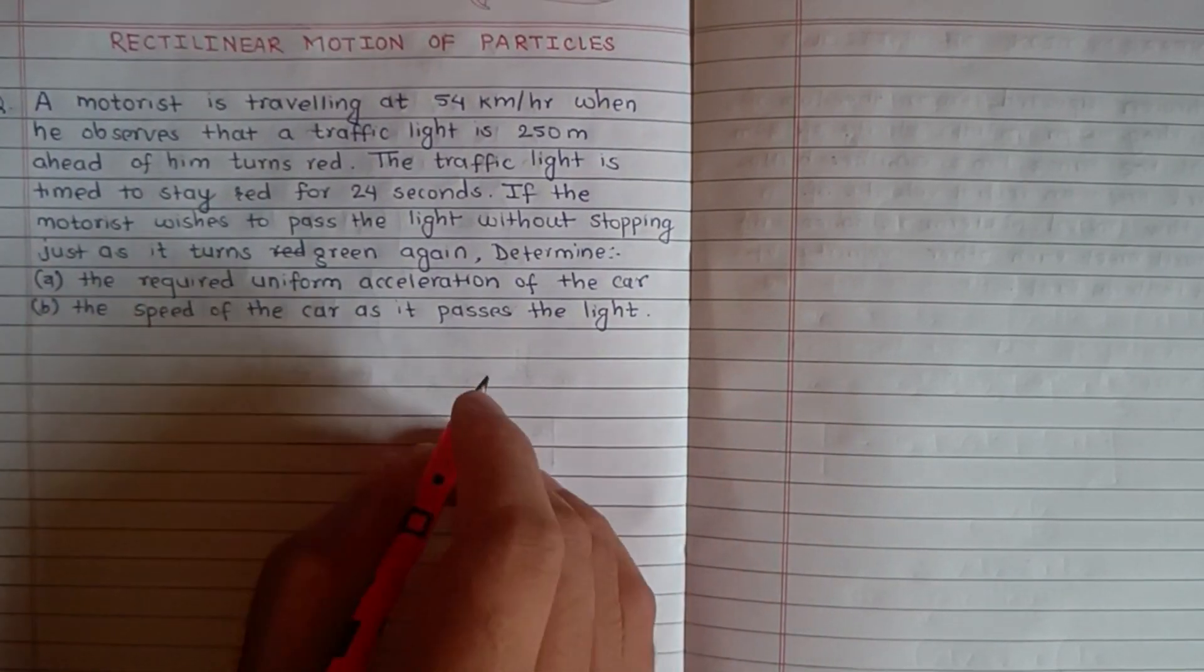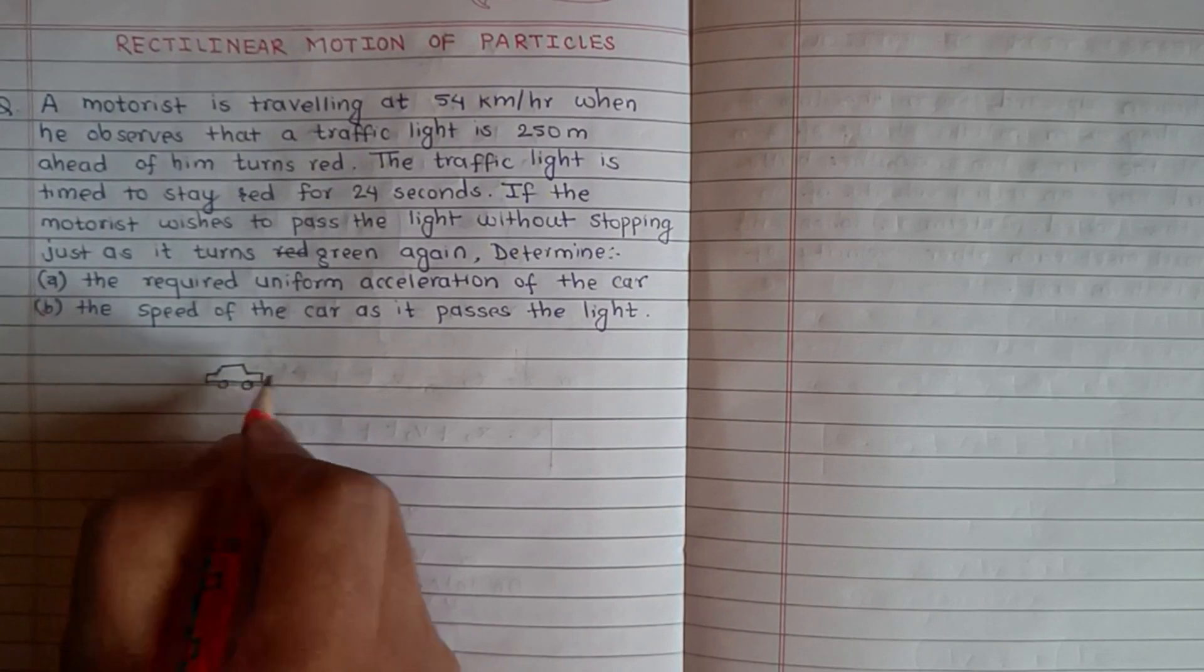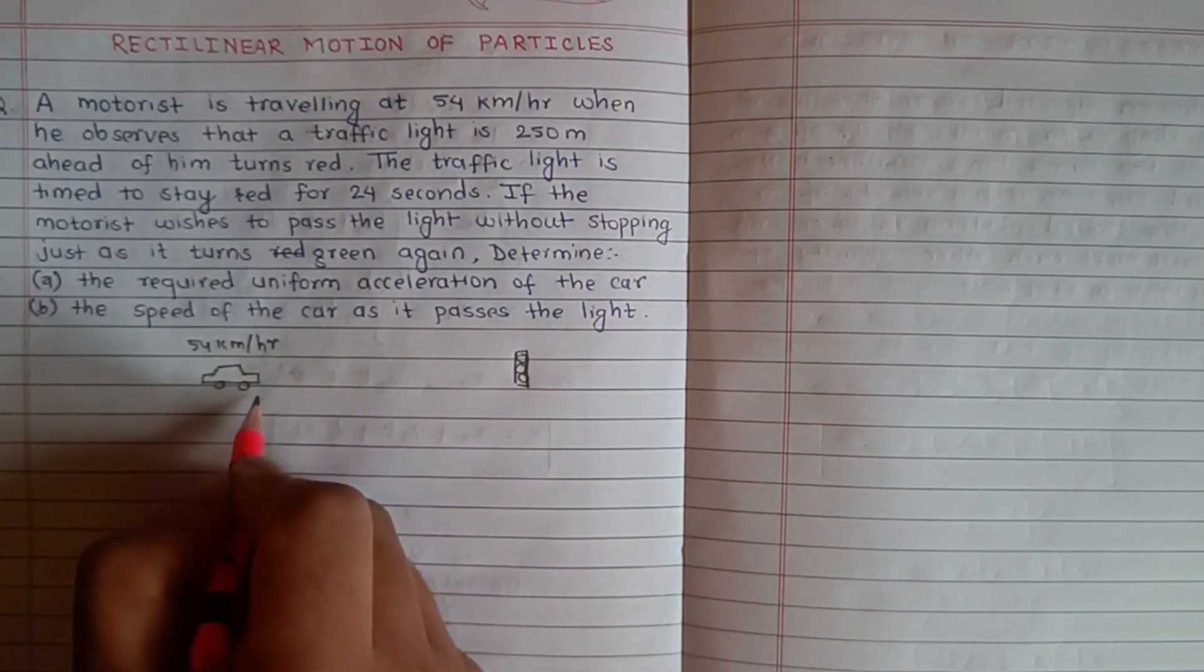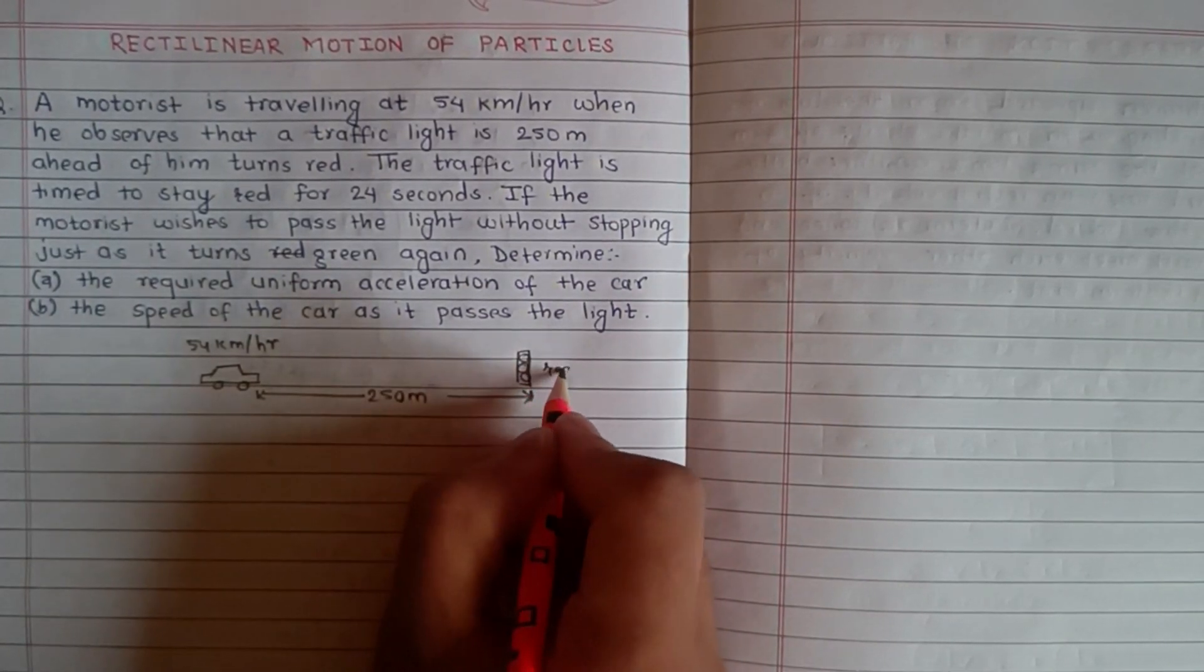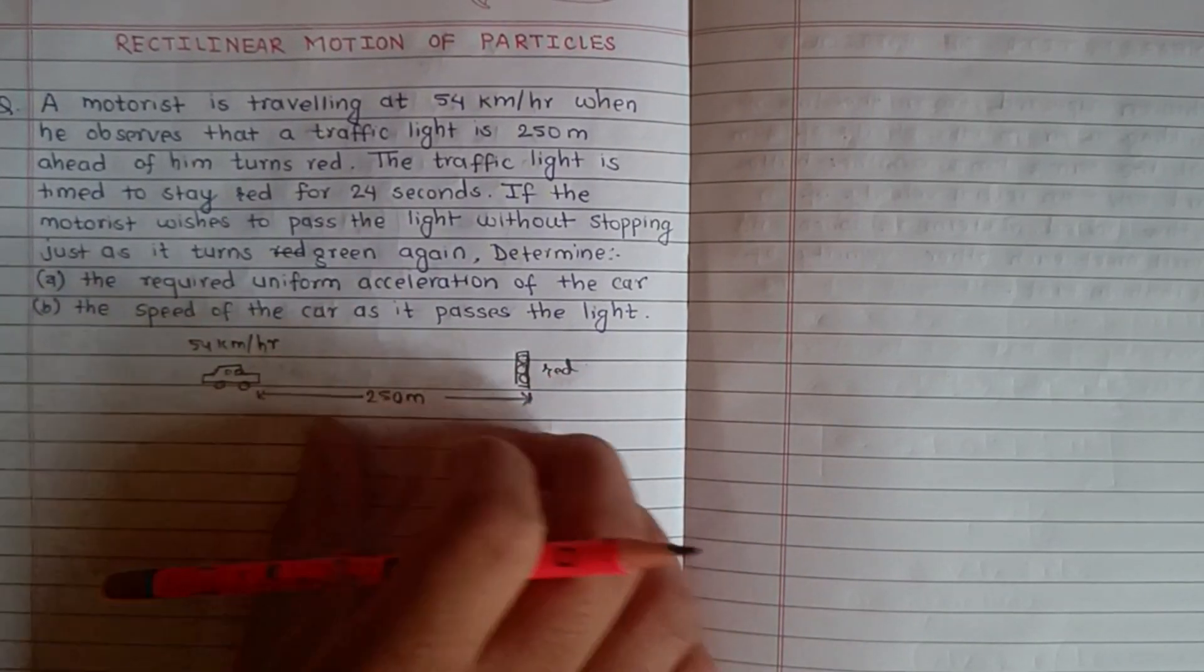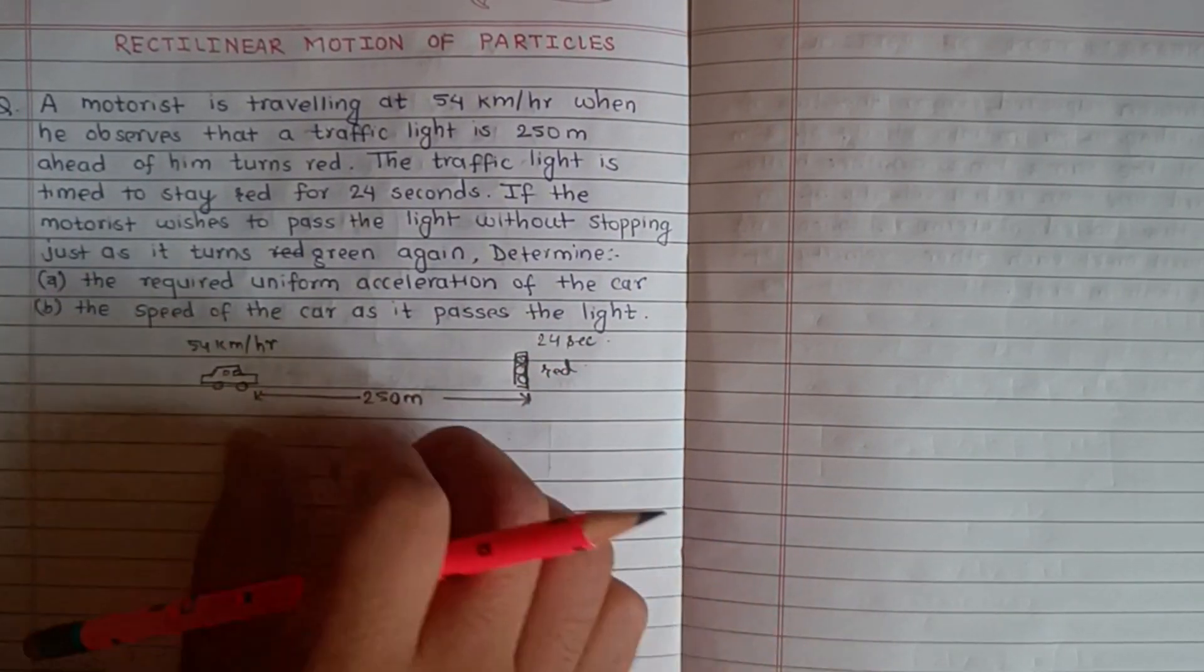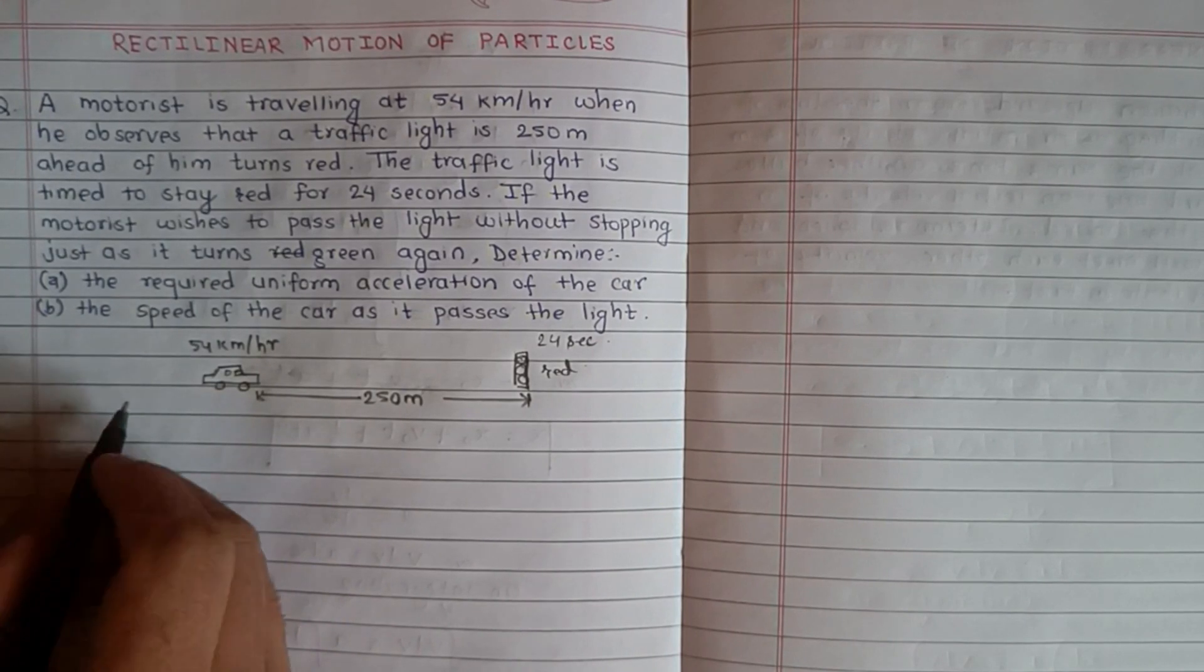So the question describes a motorist in a car with initial velocity 54 km per hour. The traffic light is 250 meters ahead and turns red. The light will turn green after 24 seconds, and we need to find the acceleration needed to pass without stopping.